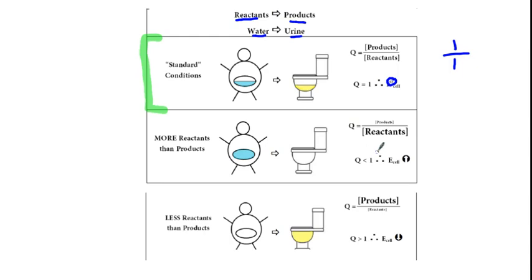You're going to have to go pee really, really bad. You're going to be jumping around like, oh my gosh, I have to pee. The potential to go pee is going to go up. So when Q is less than one, when you have a bunch of reactants and not a lot of products, your cell potential increases. This is non-standard conditions.